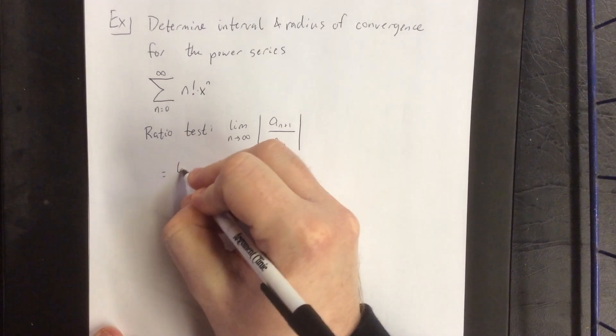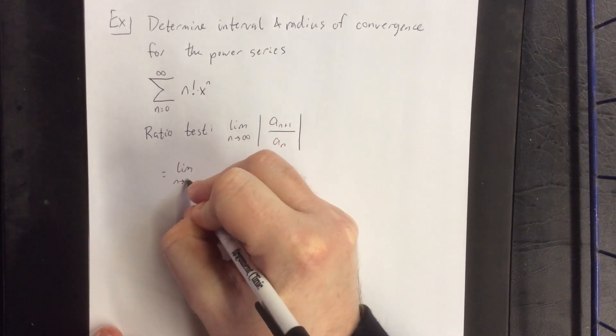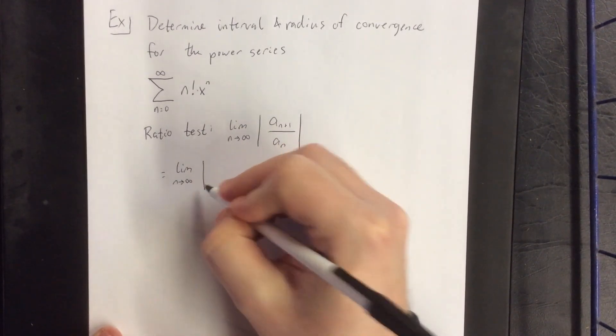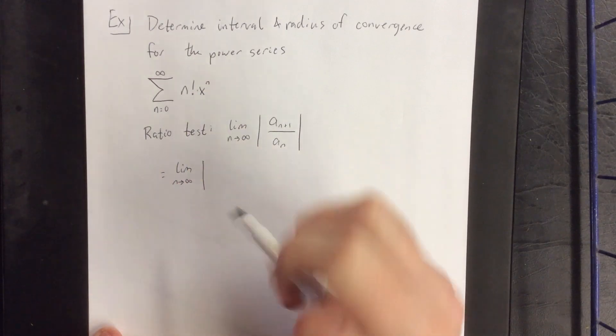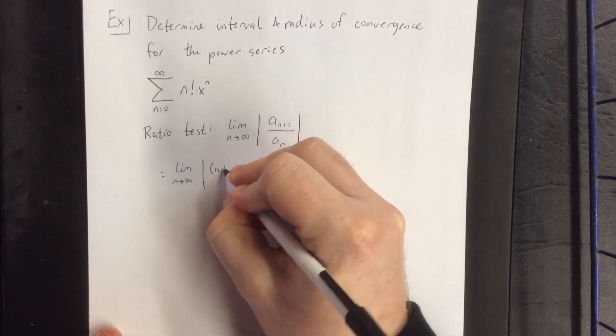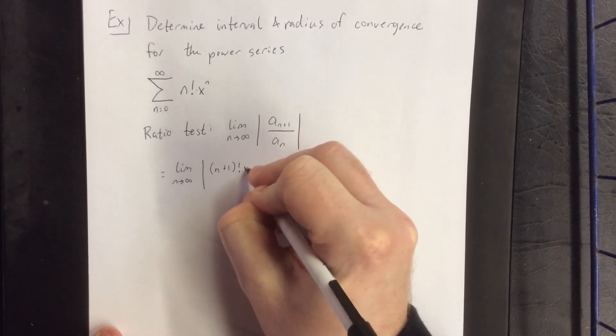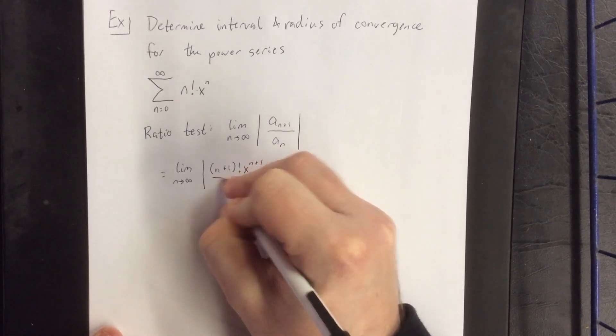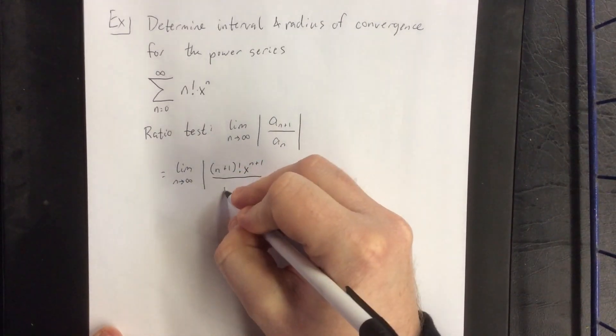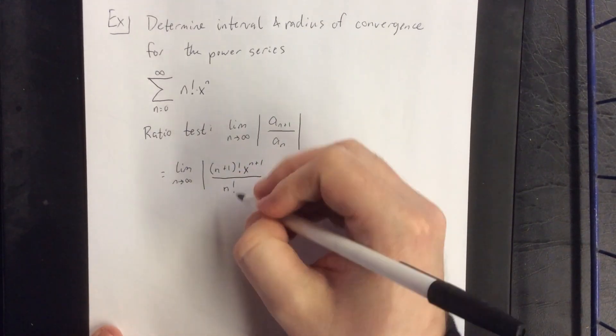Now in this case, that would be the limit as n goes to infinity of replacing the n's with an n plus 1. This will be n plus 1 factorial times x raised to the n plus 1 power, all over the original expression.